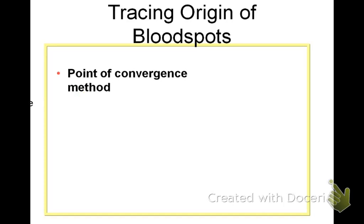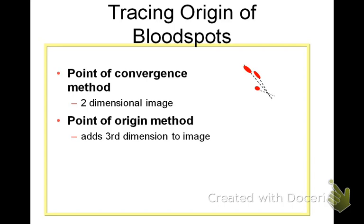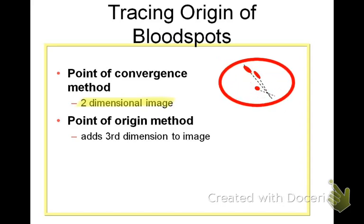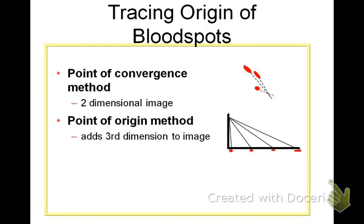We're trying to figure out where the source of blood came from. The first way we do that is to find the point of convergence, which is a two-dimensional image. Point of origin adds a third dimension to that image — we're actually determining how high off the ground the blood spatter came from.